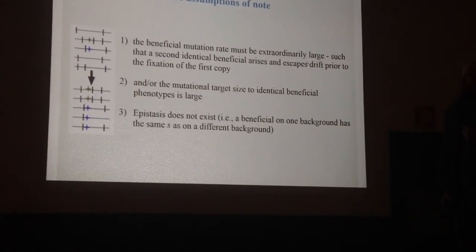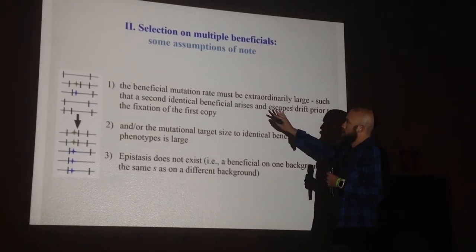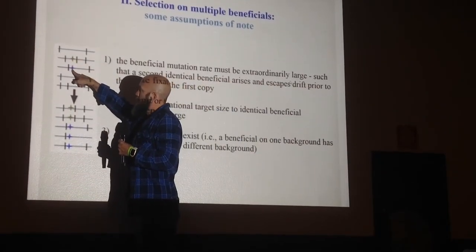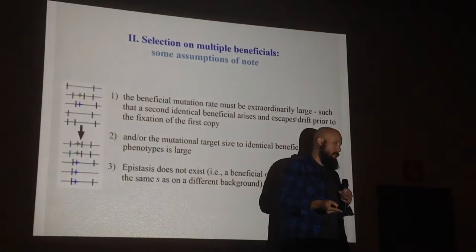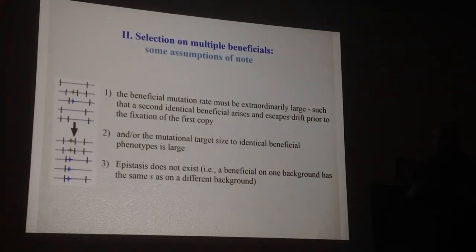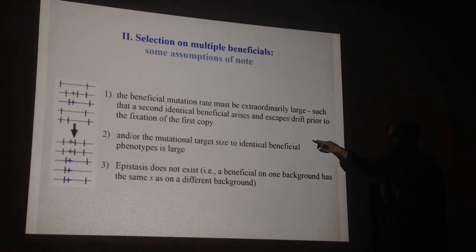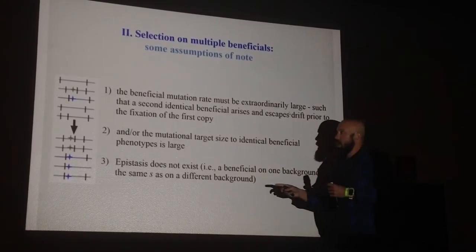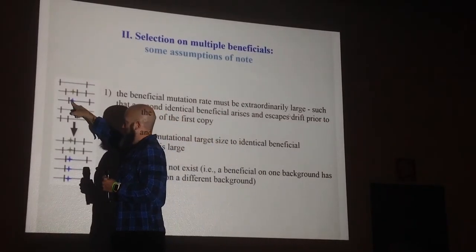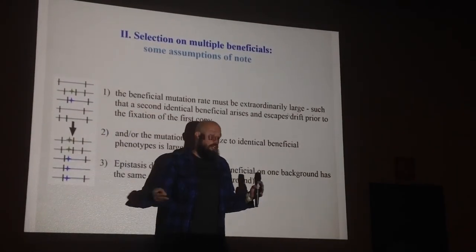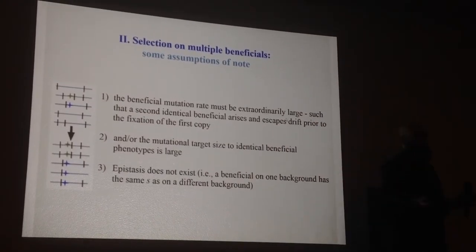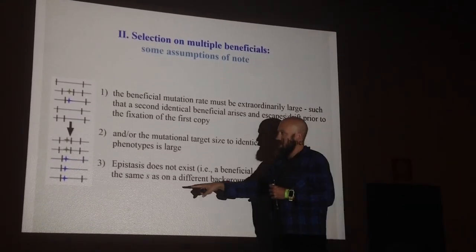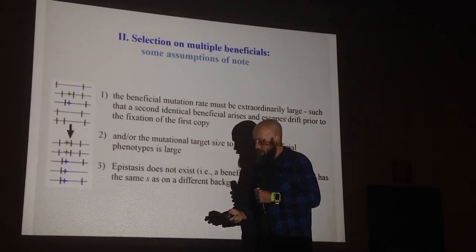Let's talk about selection on multiple beneficials quickly. In this model, the beneficial mutation rate must be extraordinarily large, such that you have this green beneficial occur and the second beneficial must hit the same site before the sojourn time of the first. In relatively rapid succession, so this is a pretty large number. Or the mutational target size to the beneficial phenotype needs to be large. That is, if it's not just a single site that gives you this selection coefficient or this beneficial phenotype, but rather a dozen sites, say any knockout will do the job, then the target size is bigger, that makes it a little more attainable. And we still of course have this epistasis problem—we need these mutations to have the same selection coefficient regardless of what haplotype they're sitting on.